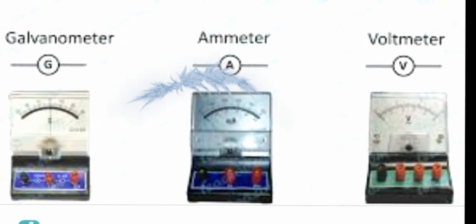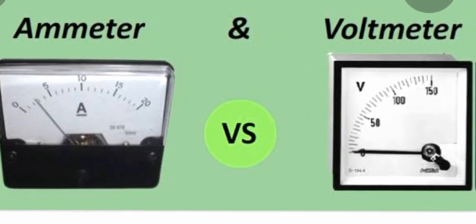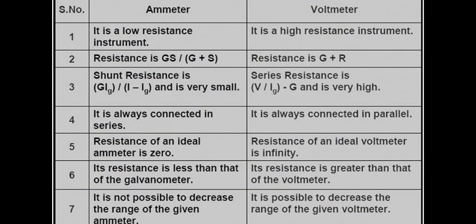Now you can see the basic diagram of the galvanometer, ammeter, and voltmeter clearly. The basic difference between the ammeter and the voltmeter: an ammeter is a lower resistance instrument but the voltmeter is a high resistance instrument. Resistance in ammeter is G·S divided by G plus S, and resistance in voltmeter is G plus R. Shunt resistance in ammeter is very small and series resistance in voltmeter is very high. The ammeter is always connected in series but the voltmeter is always connected in parallel.